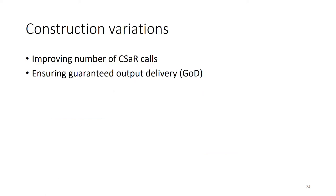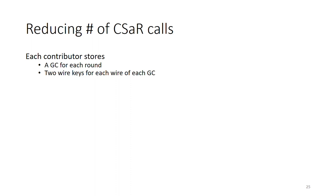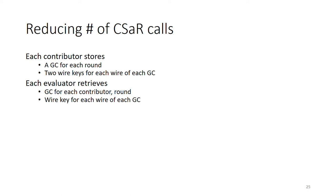In addition to this main construction, we provide two variations. One is the protocol which focuses on improving the number of CSAR calls of our construction. The other is the protocol which achieves guaranteed output delivery, meaning that the dishonest parties cannot prevent honest parties from learning the output. The CSAR storage requests consist of each contributor storing a garbled circuit for each round of the construction, as well as storing two wire keys for each wire of each garbled circuit.